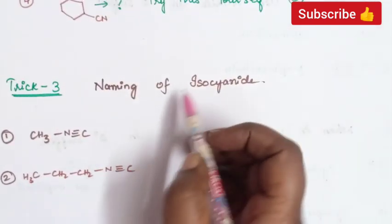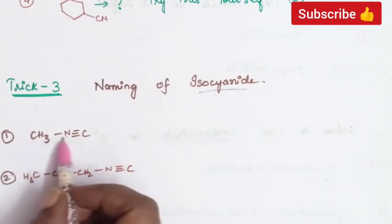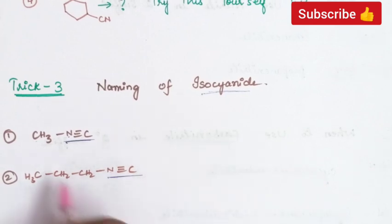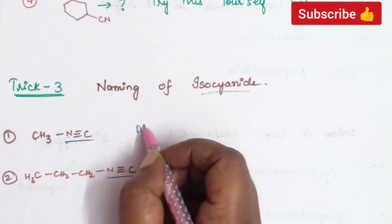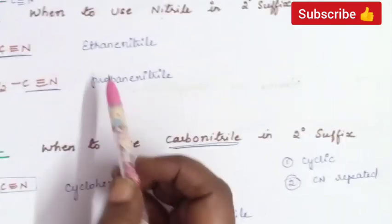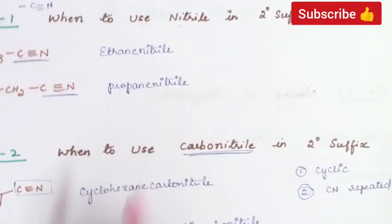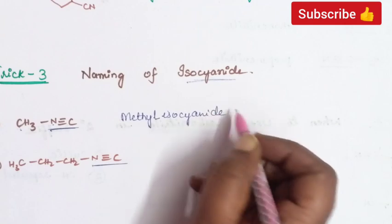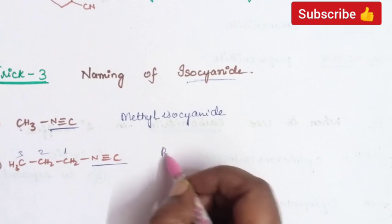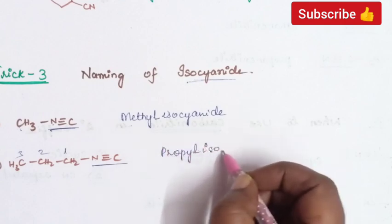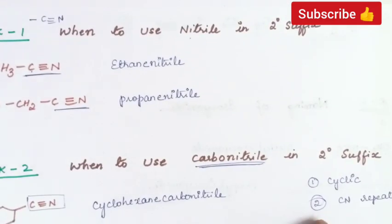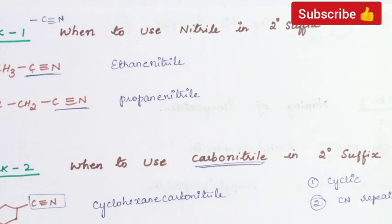Trick number three: how to name isocyanide. When nitrogen is connected to the carbon chain (N triple bond C), it is isocyanide, and we use the alkyl name as a prefix. Note the difference: for isocyanide we use methyl, propyl, etc., whereas for cyanide we used ethane and propane. So one carbon attached to isocyanide group is methyl isocyanide, and three carbons attached is propyl isocyanide. These are the three tricks to name any cyanide and isocyanide compound.